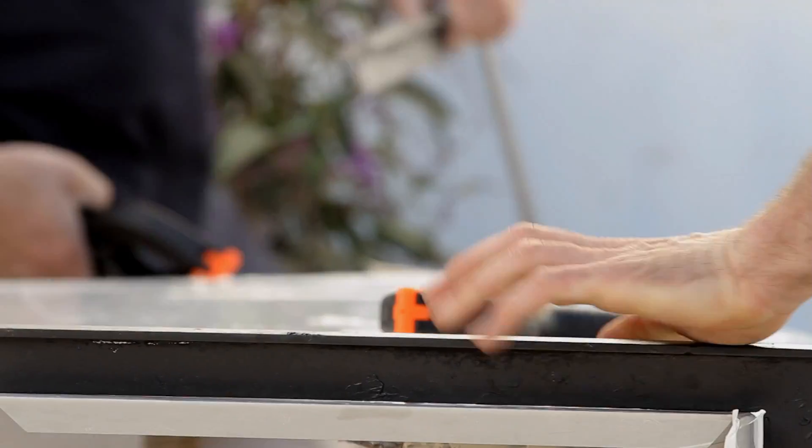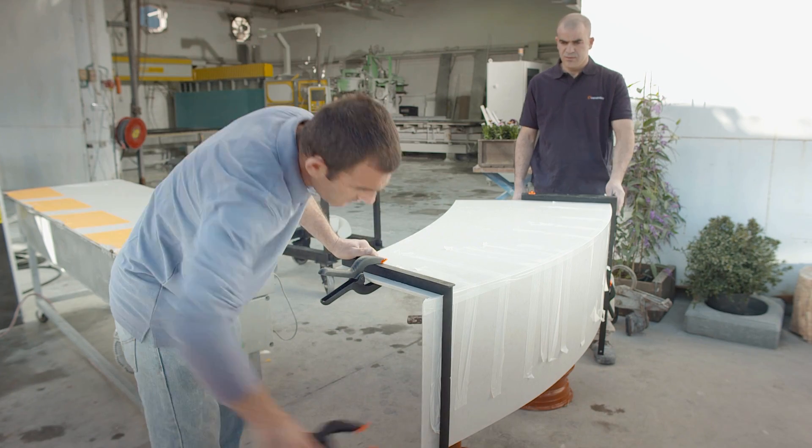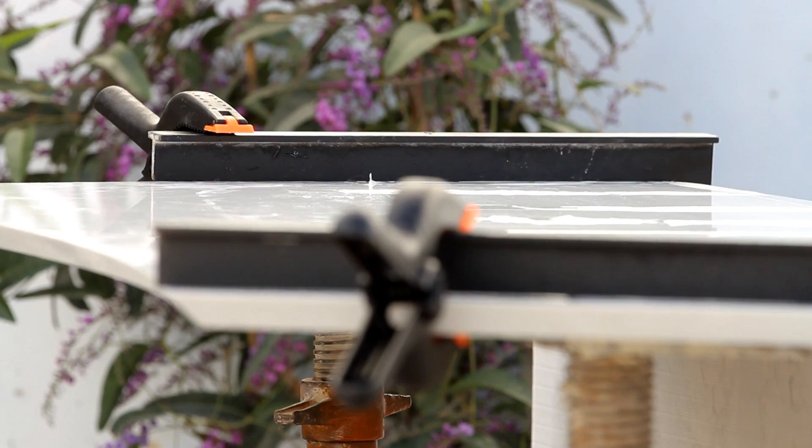Clamp the thermoformed Caesarstone to the edge of the coffee table at an exact 90 degree angle to ensure that it's perfectly aligned. Remove the tape. The piece should now retain its thermoformed shape.